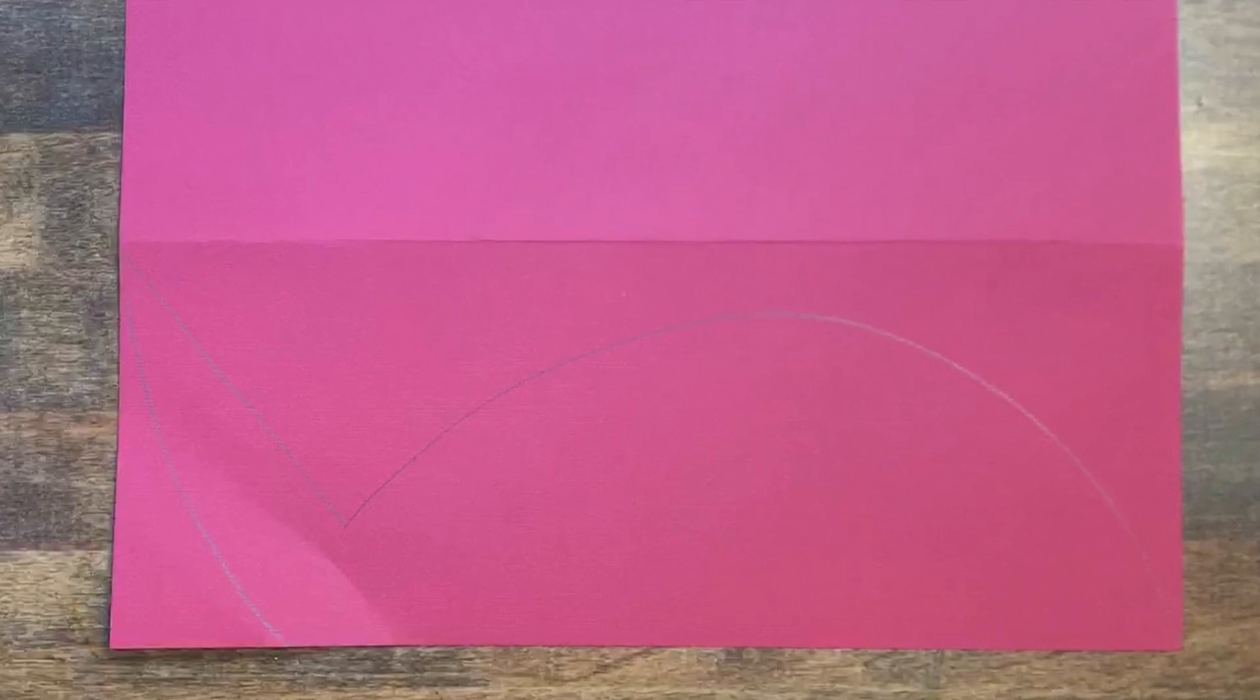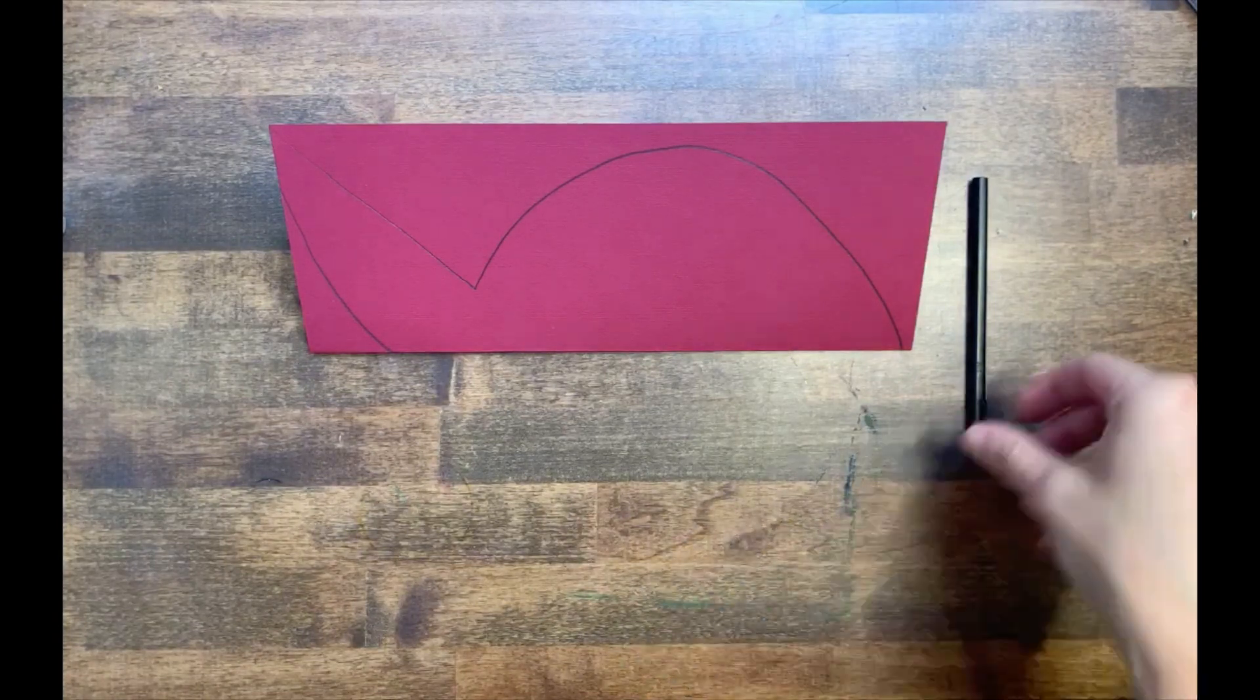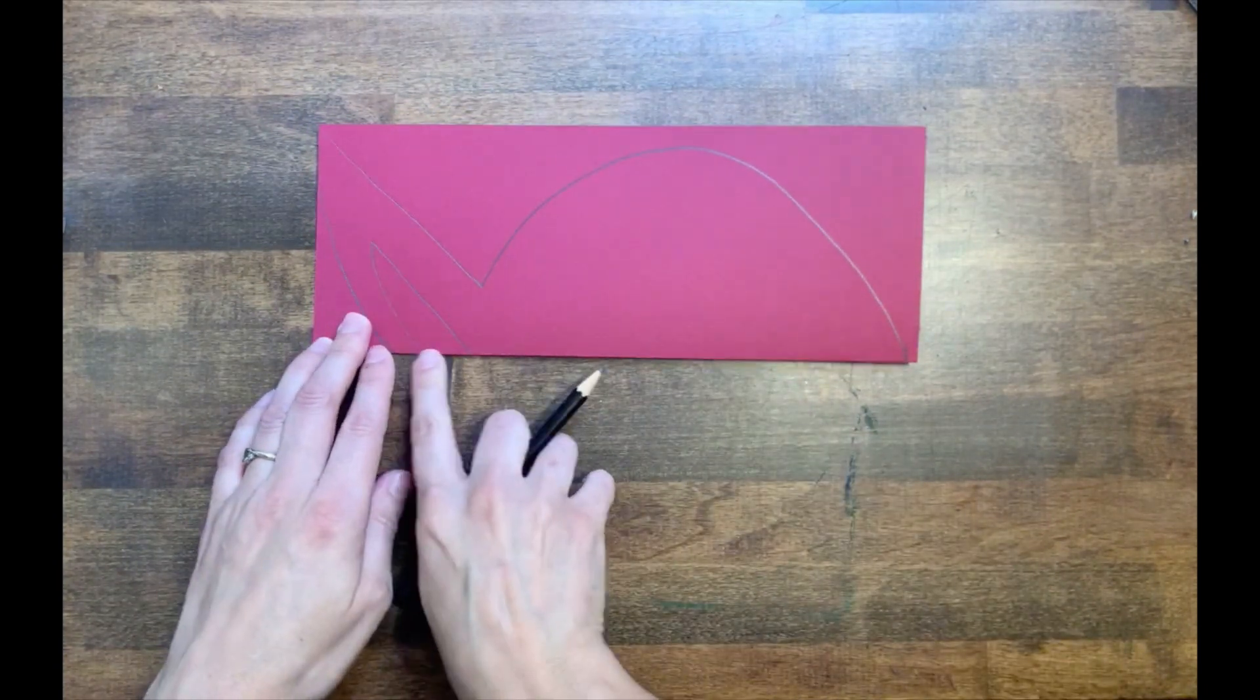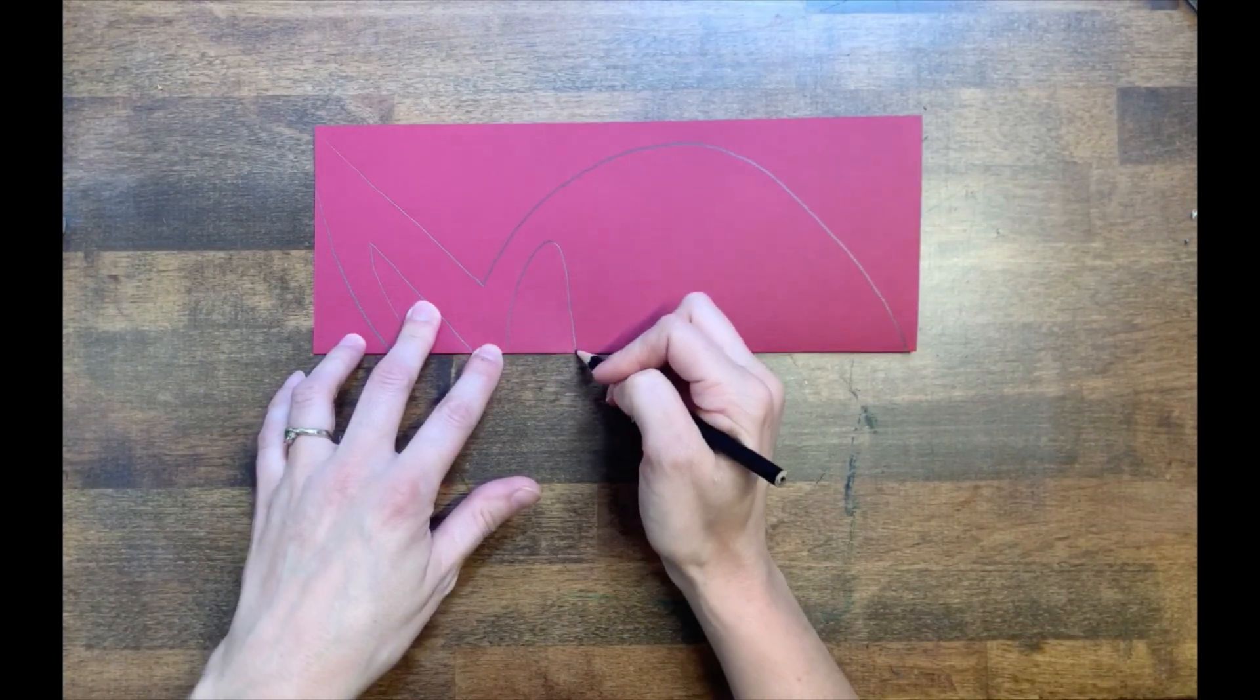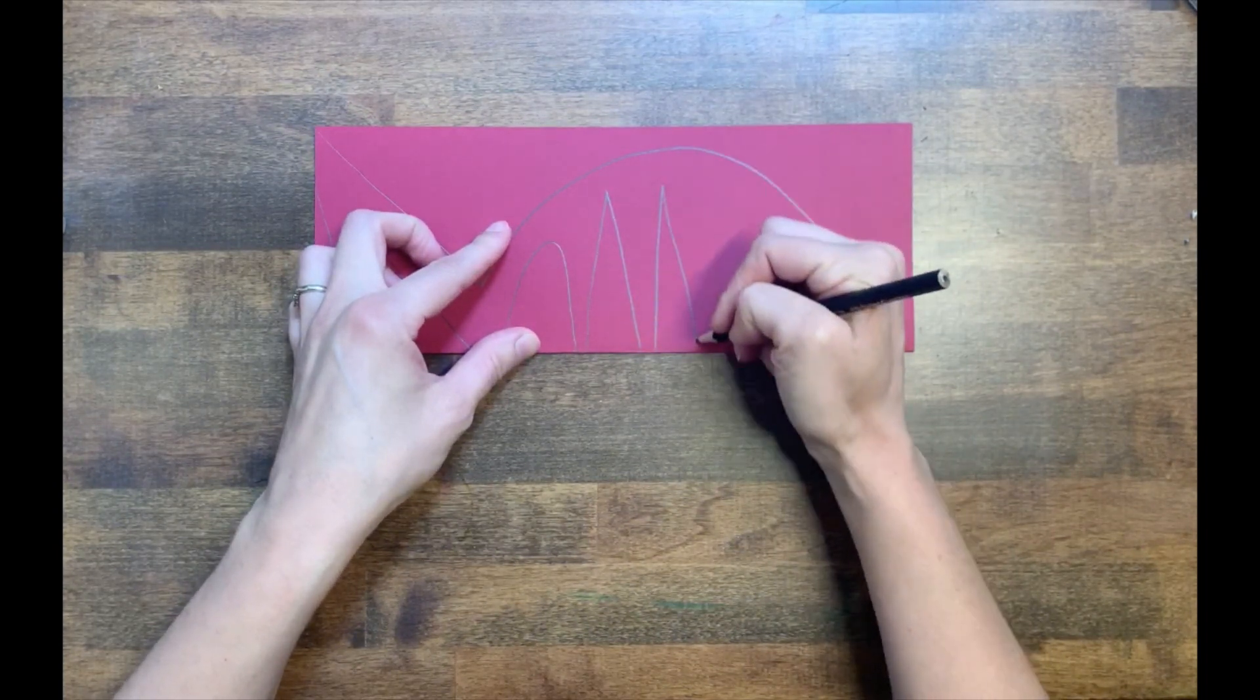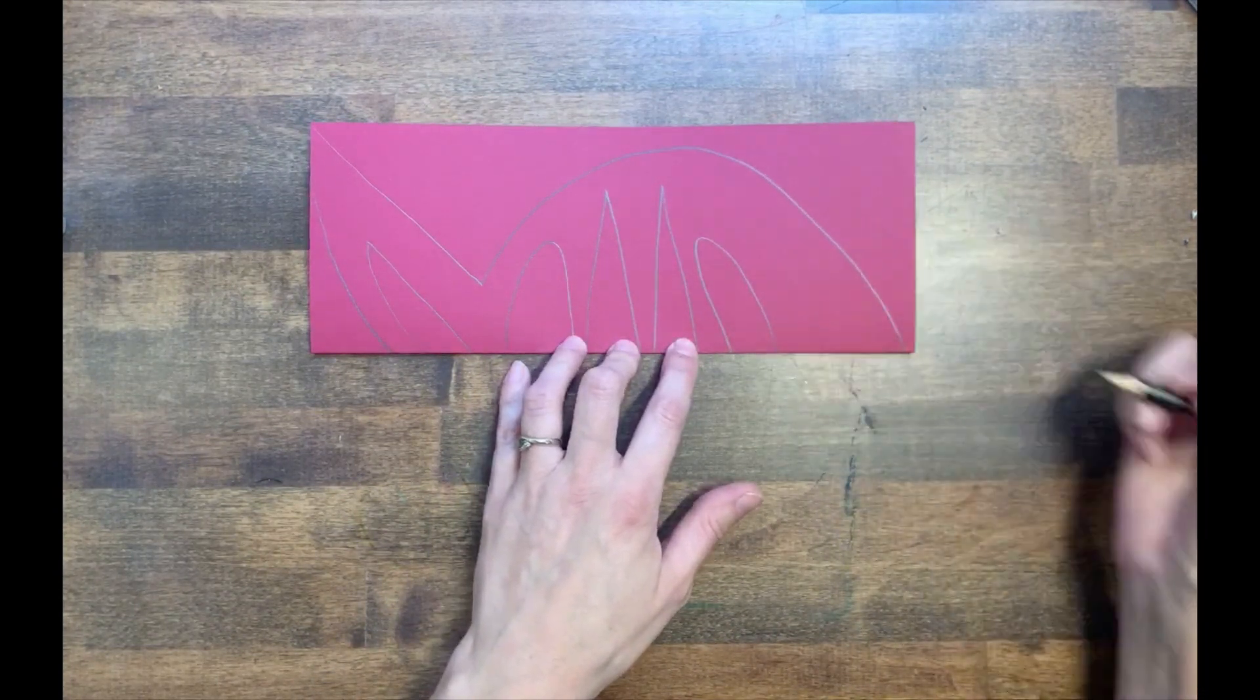We're going to make our fish look more interesting by adding shapes on the inside that we will eventually cut out. They can be any shape you want, but here's the catch. You have to start drawing your shape on the folded line and end on the folded line. And your shape cannot touch the outline of your fish. Watch as I draw a few shapes in the body of my fish. Now pause the video while you draw shapes in the body of your fish.